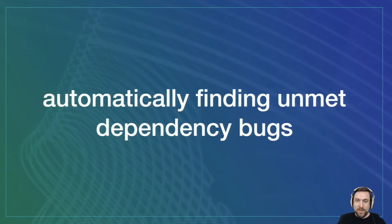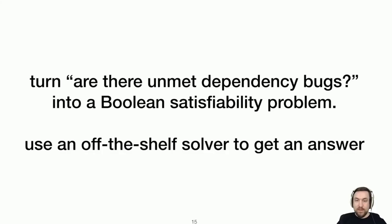So let's take a look at how we tackle this challenge of finding these unmet dependency bugs automatically. Our approach to solving this is to take this question of, are there unmet dependency bugs in this kconfig source code into a classic Boolean satisfiability problem? Because if we can do that, then we can leverage these existing solvers that can tell us an answer to Boolean satisfiability problems.